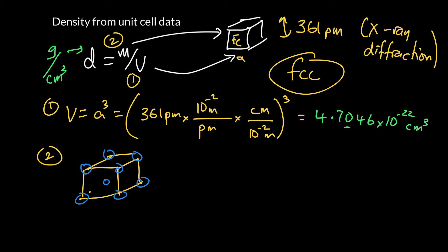Okay, so these are my corners. And remember, each atom at a corner is only one-eighth of the way in. So my number of atoms is, I've got eight atoms at the corners. And each corner is only one-eighth in.